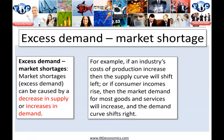Excess demand — market shortages — we call that excess demand, and it can be caused by a decrease in supply or increases in demand. For example, cost of production increasing — we know from our supply topic that the supply curve is going to shift left. From the demand topic, an increase in demand could be caused by consumer incomes rising. If this happens, the market demand for most goods and services will increase and the demand curve shifts right.